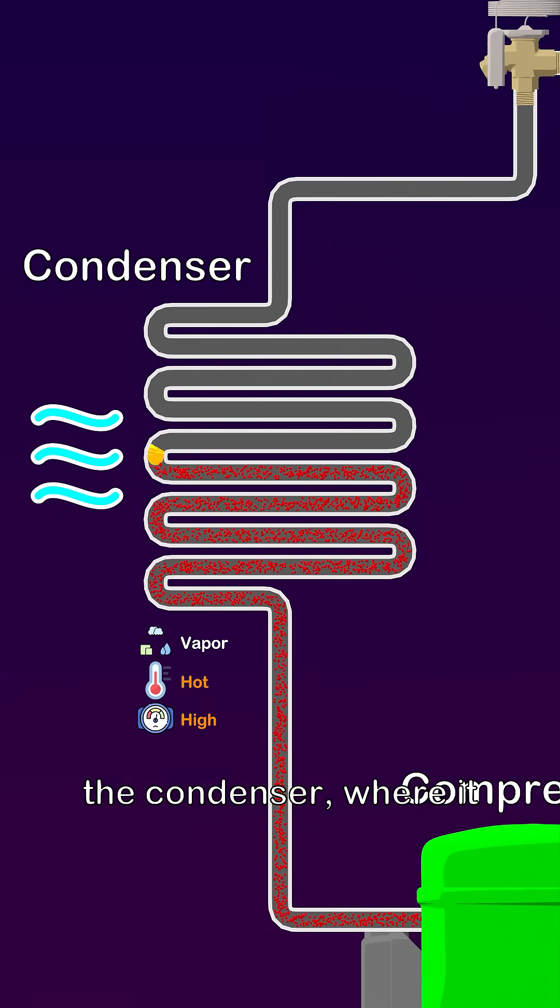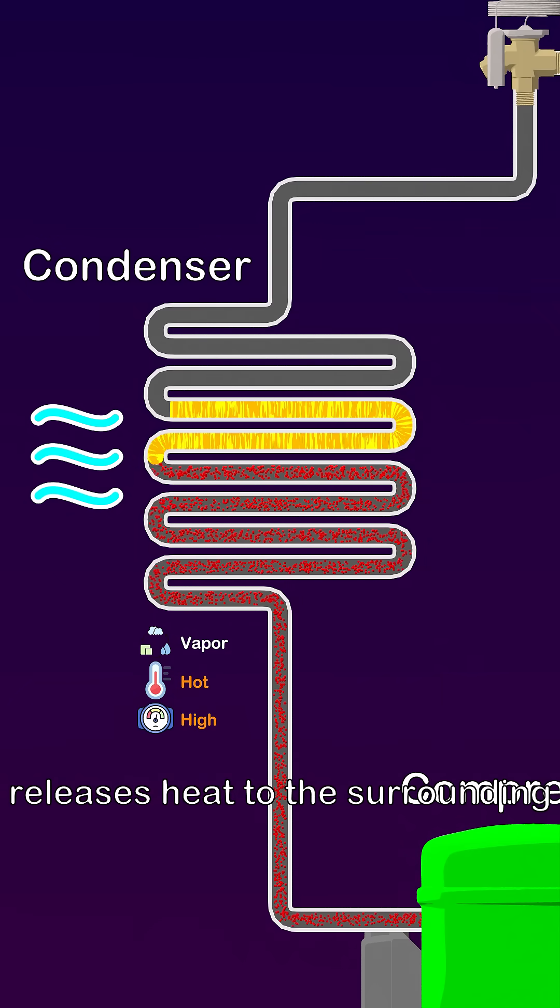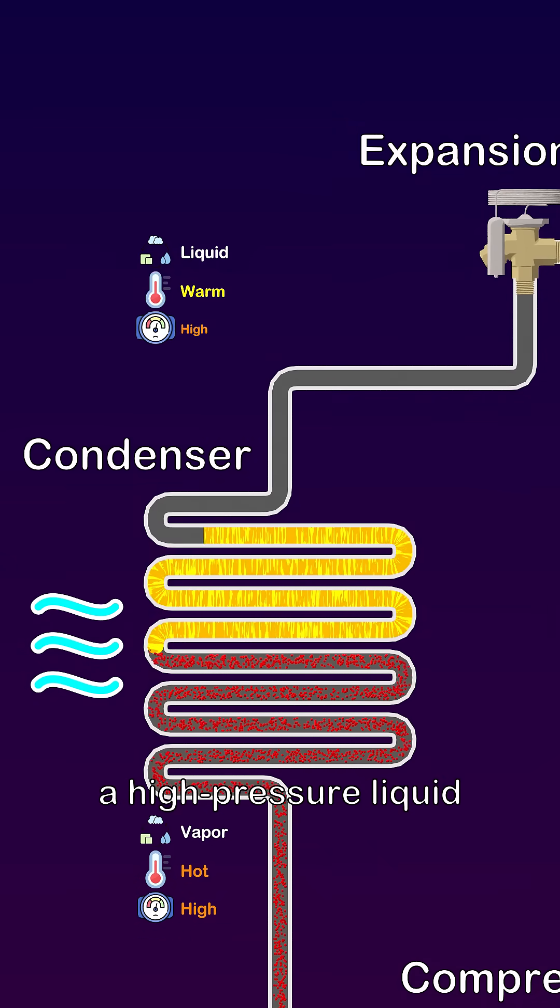This vapor then enters the condenser, where it releases heat to the surrounding air and condenses into a high pressure liquid.